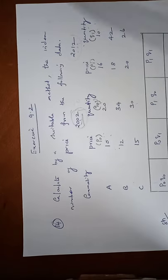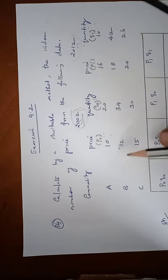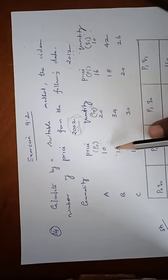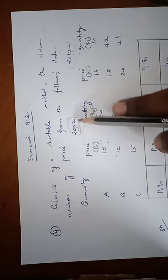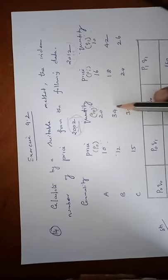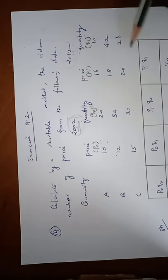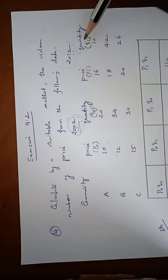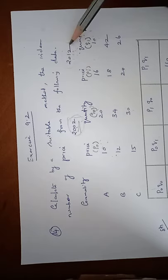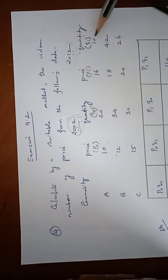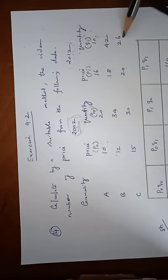The commodities are given, three commodities A, B, C, and price values are 10, 12, 15 in the year 2002. Quantity entries are 20, 34, and 30. And next year 2012, price entries are 16, 18, 20 and quantity entries are 10, 42, and 26.